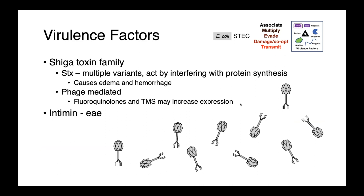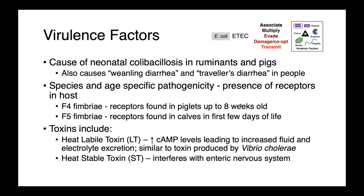Starting with STECs: the shiga toxins, STX, of which there are multiple variants, are really the hallmark. They act by interfering with protein synthesis, causing edema and hemorrhage. These toxins may be phage-mediated, and as a result, treatment with antimicrobials can be contraindicated — fluoroquinolones and trimethoprim-sulfa can actually increase toxin expression, paradoxically making the disease worse. Some STEC E. coli also produce intimin, encoded by the EAE gene, which is also associated with attaching and effacing lesions.